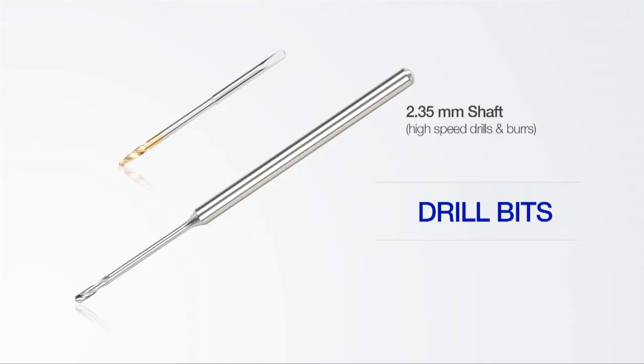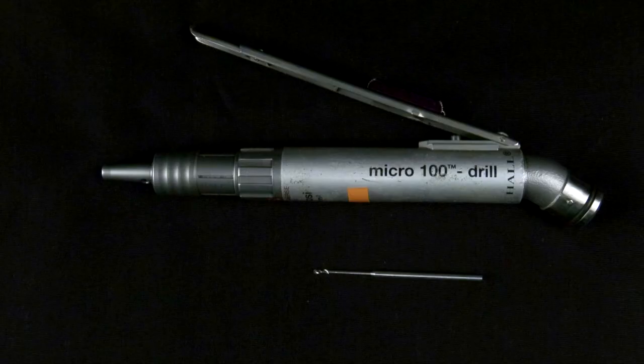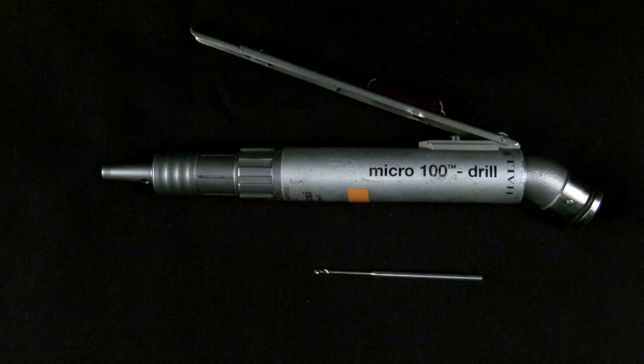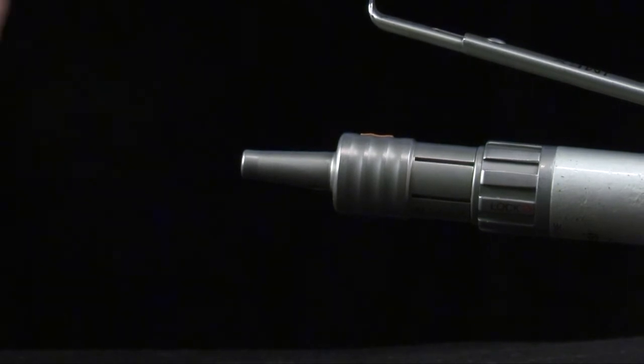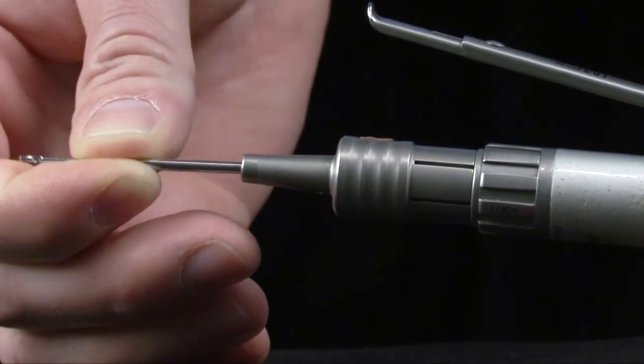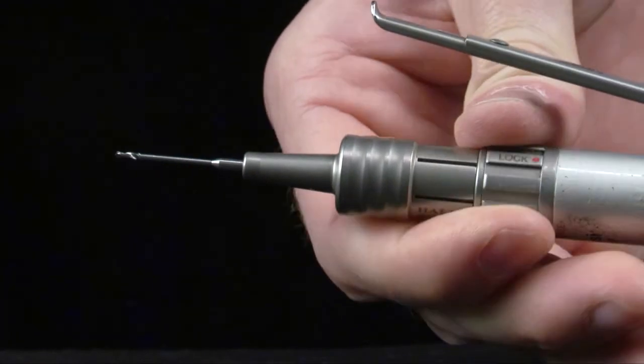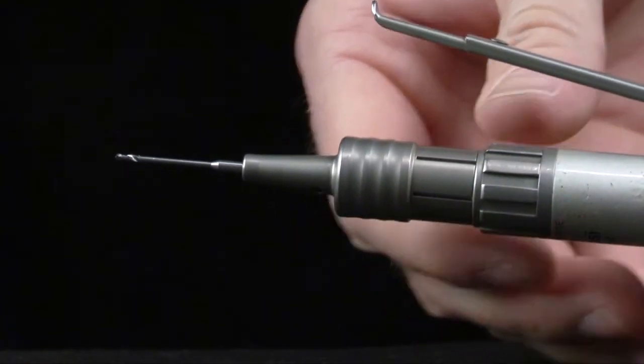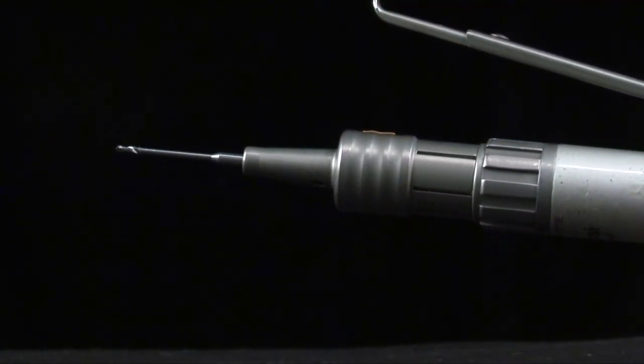Also available are appropriate diameter drill bits featuring 2.35 millimeter shafts. The 2.35 millimeter shafts are compatible with common pneumatic and electric high-speed drills. The Hull Micro 100 drill with 500 to 20,000 RPM capability is one example of this type of drill and is ideal for use with the VetKISS system.